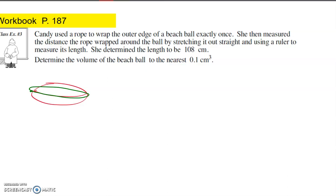So that's what they're saying, she wrapped it around and then she measured the distance of the rope wrapped around the ball by stretching it out straight. So then she took this green rope and stretched it out and made it into a straight line. So this rope that had gone around the ball is now placed.